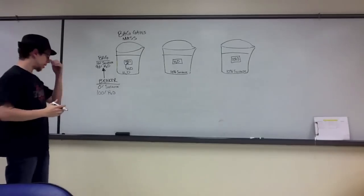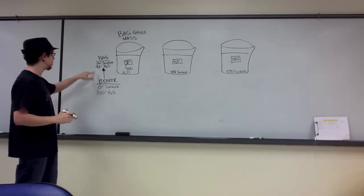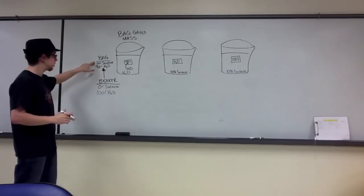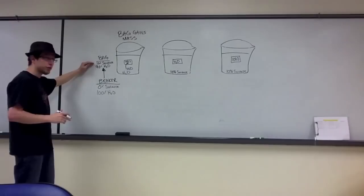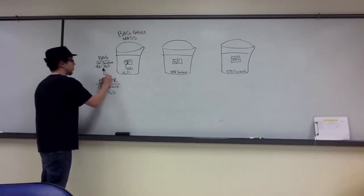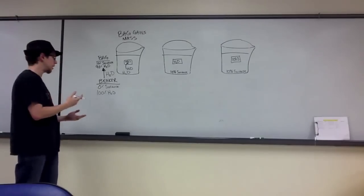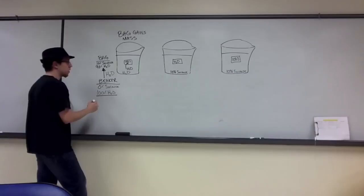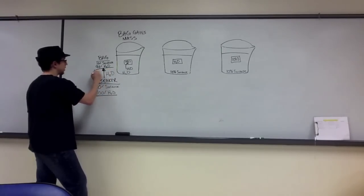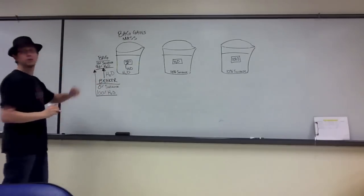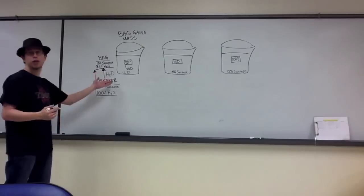Osmosis always occurs from lower solute concentration to higher solute concentration — there's more sucrose in the bag than in the beaker. If you write everything out, you can also look at it this way: we have 100% water in the beaker and only 90% in the bag. So water goes from the higher percentage to the lower percentage of water, from 100% to 90%, and the direction is still the same.